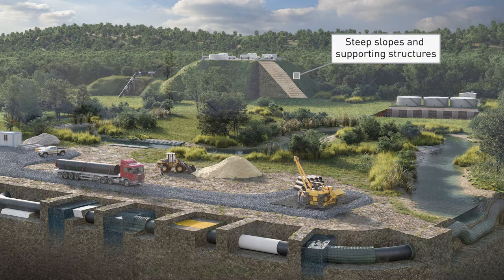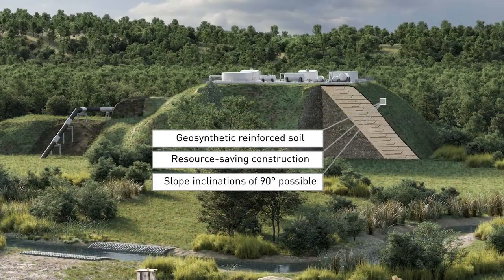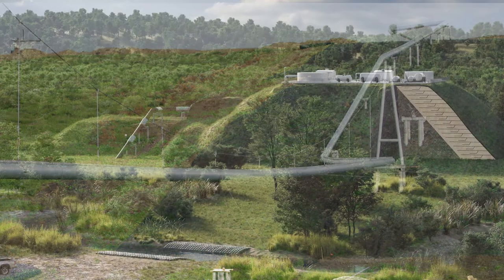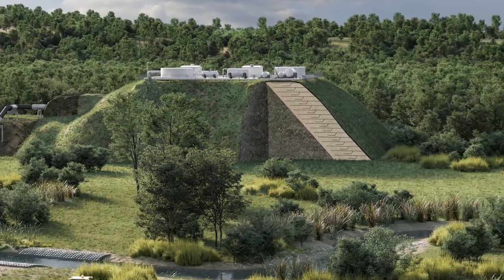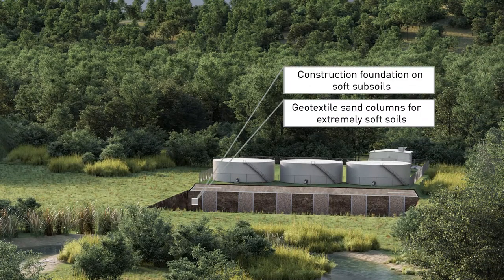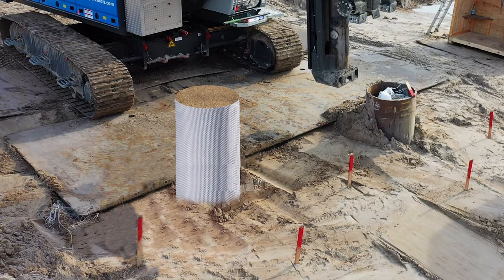In challenging terrain, slope stabilization or erosion protection may also be addressed. The slope stabilization can be implemented as reinforced soil, which saves resources and even allows the construction of steep slope inclinations of 90 degrees. In terms of surface erosion, an erosion protection grid can ensure the integrity of the embankment surface even in the event of short-term overflow. Furthermore, certain peripheral structures such as compressor stations must be located along the pipeline route at regular intervals. In regions with predominantly soft soils, the need for a qualified soil improvement and foundation system must be analyzed. One possible soil improvement technique for extremely soft and organic soils can be sand columns made of geotextile.